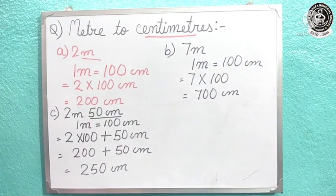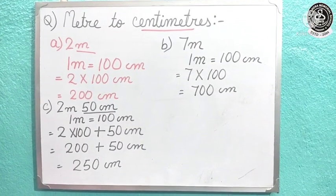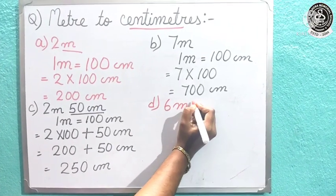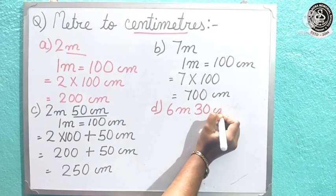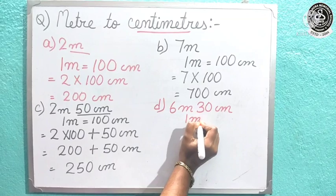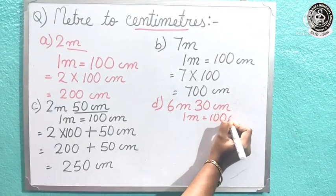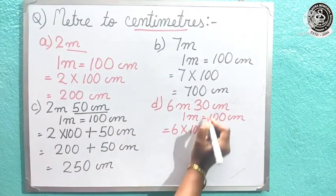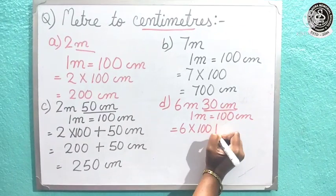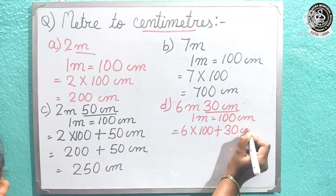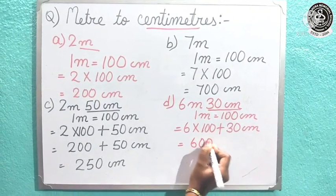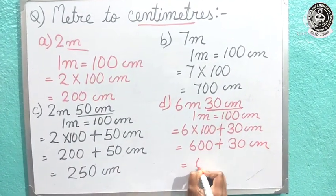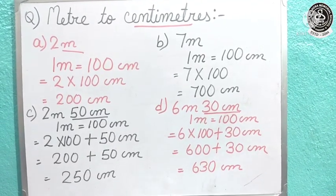Let us see one more example — question number D: 6 meter and 30 centimeter. Same process: 1 meter is equal to 100 centimeter. Now 6 meter will be changed into centimeter, and 30 centimeter is already in centimeter so no need to convert it. So 6 into 100 is 600, plus 30 centimeter.